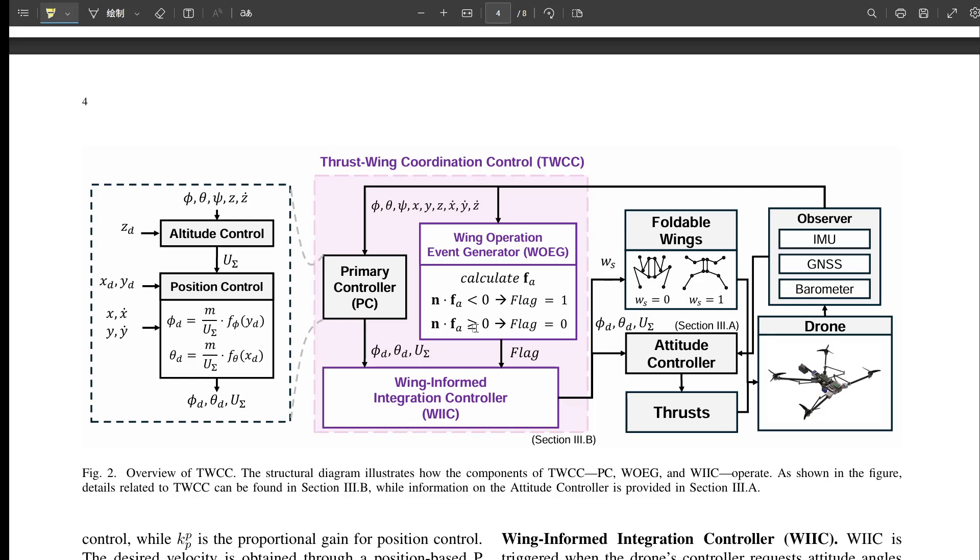It uses the aerodynamic force from the wings, the force the WOEG predicted, to actually achieve the maneuver the PC wanted. Ah, so instead of just tilting more, it uses the wings as an extra control surface to get that push or braking effect. Exactly that. And this coordinated action lets the drone do things that would be impossible or unstable with just propellers.